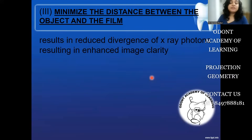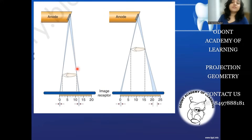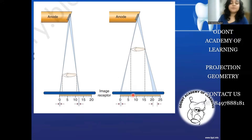The third principle says that we must minimize the distance between the object and the film. So while principle two states that the distance between the focal spot and the tooth should be more, the distance between the tooth and the film should be less — as close as possible. This is because x-ray photons tend to diverge after hitting the tooth, and placing the film farther away increases divergence, increasing penumbra and image blurriness.